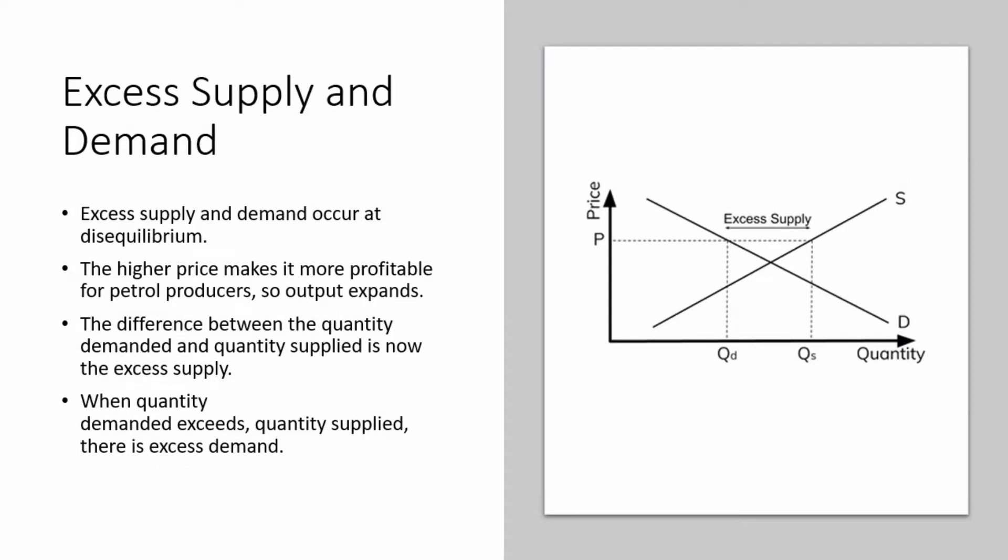Excess supply and demand. Excess supply and demand occur at disequilibrium. The higher price makes it more profitable for petrol producers, so output expands. The difference between the quantity demanded and quantity supplied is now the excess supply. When quantity demanded exceeds quantity supplied, there is excess demand.